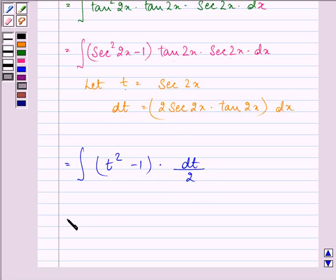Further, 1 by 2 into integral of t square into dt minus 1 by 2 into integral of 1 into dt.